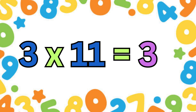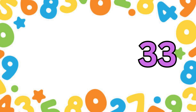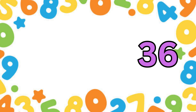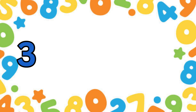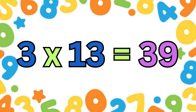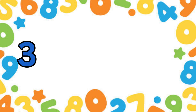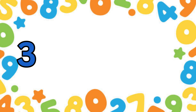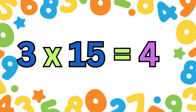Three elevens are thirty-three. Three twelves are thirty-six. Three thirteens are thirty-nine. Three fourteens are forty-two. Three fifteens are forty-five.